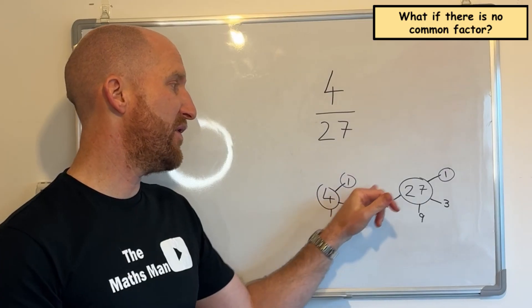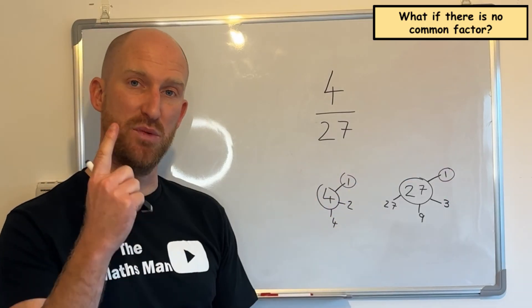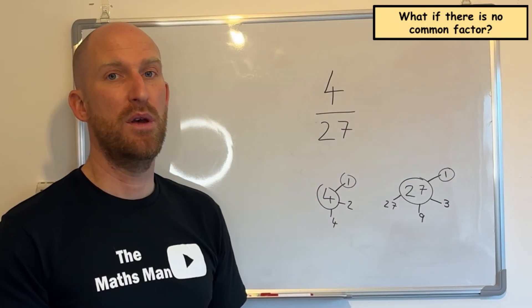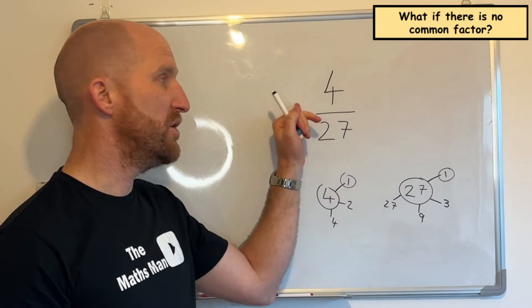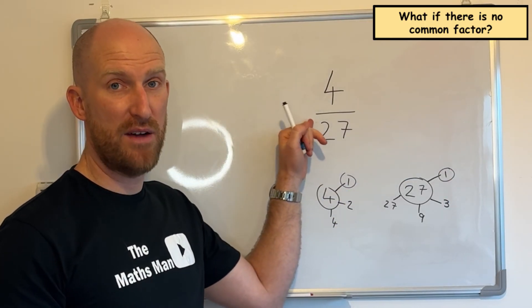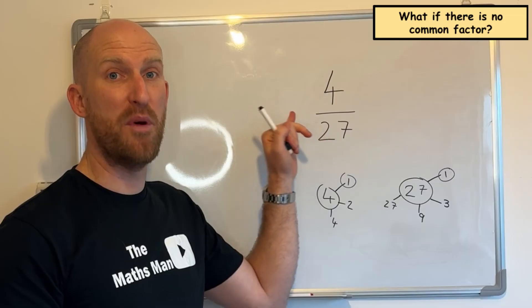So if the only common factor is one, then you already have the fraction in its lowest form.